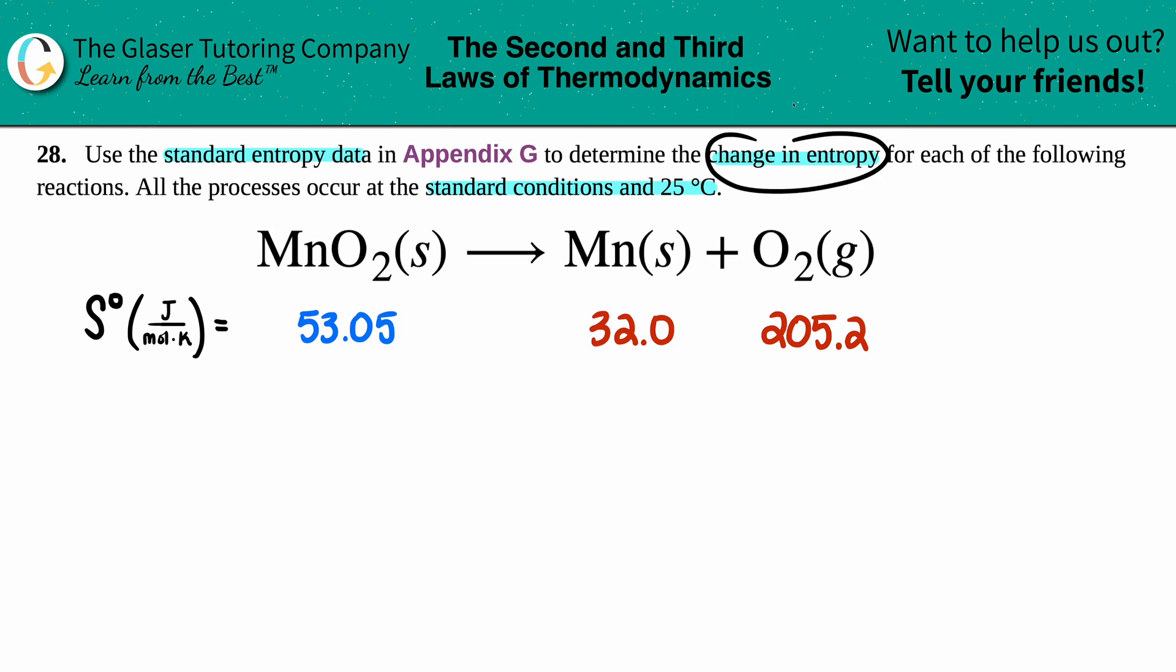Now they just want us to find the change in entropy, and the change in entropy is always that delta, right? In this case we have to find the delta S—S stands for entropy. Now we're using standard data, so that means we're just finding the delta S notch. That means we're at standard conditions.